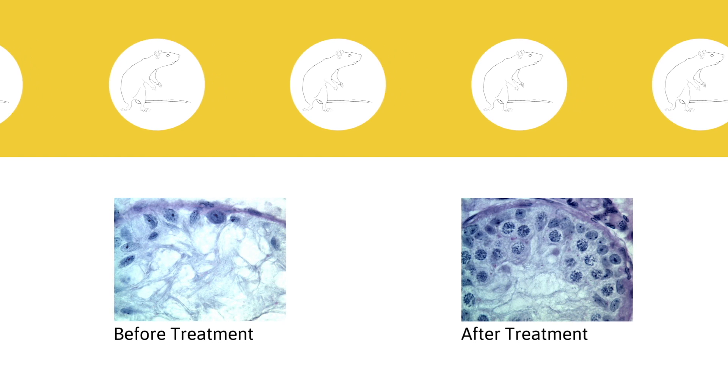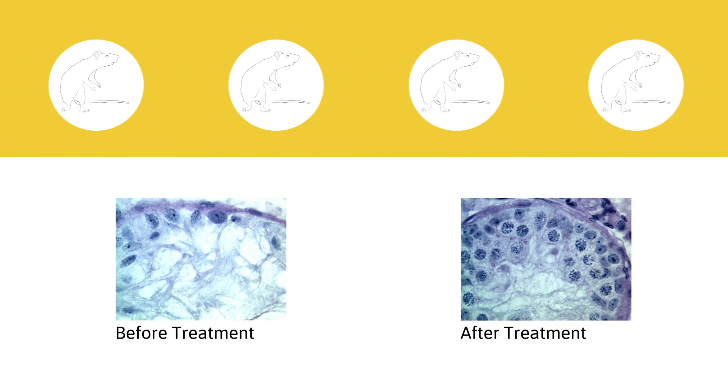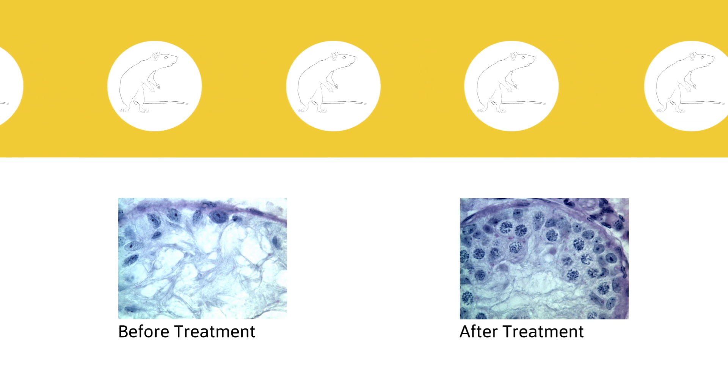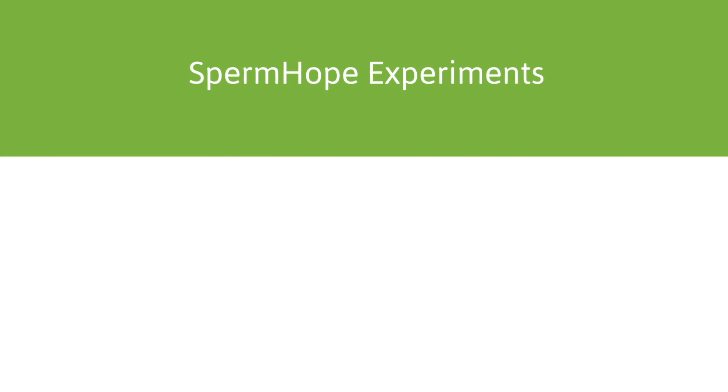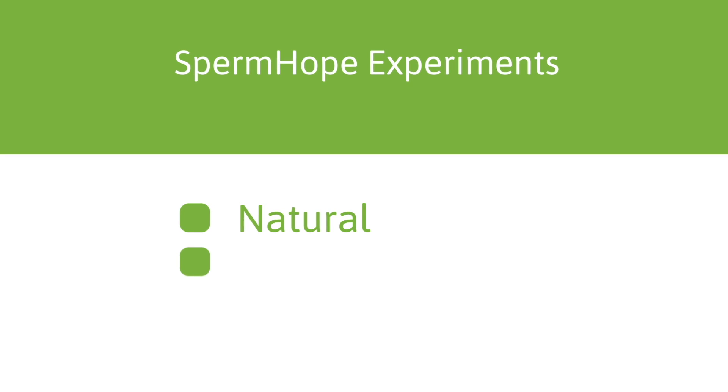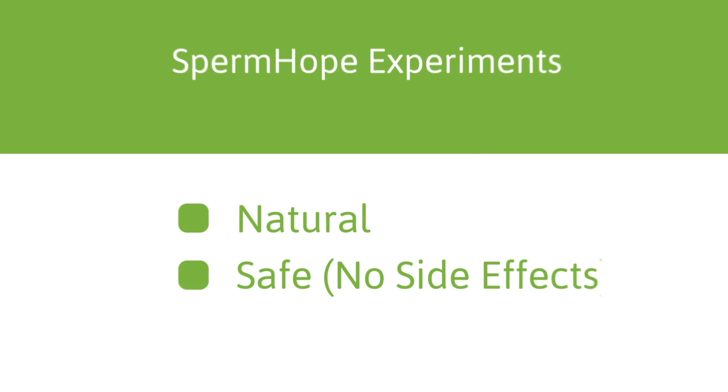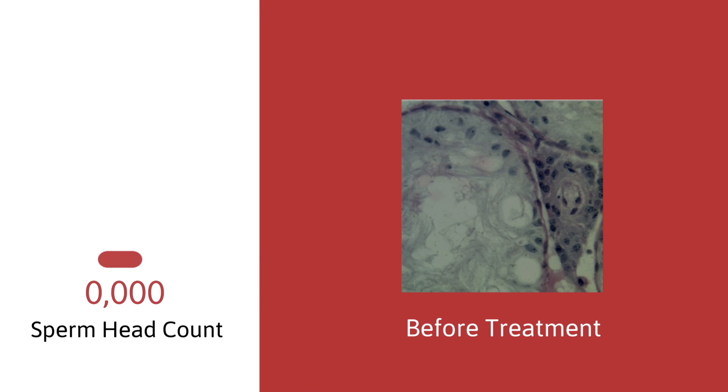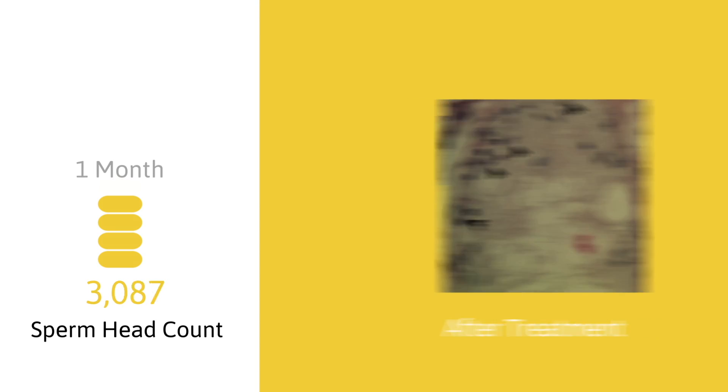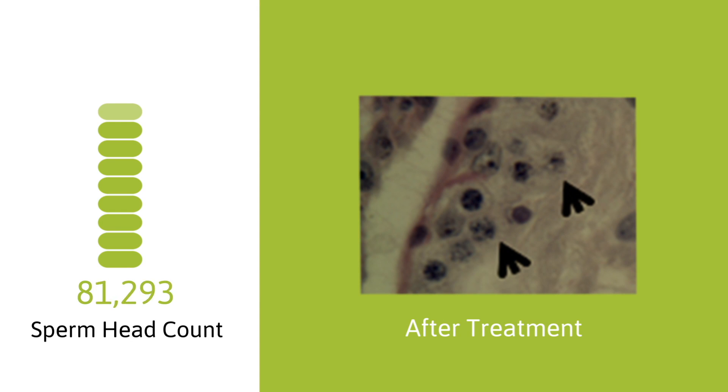SpermHope treatment has the same idea that we explained before, but SpermHope treatment is 100% natural and has no side effects. This section is from the control group and it shows empty tubules. Treatment for two months with SpermHope increased the germ cell divisions and increased sperm production.